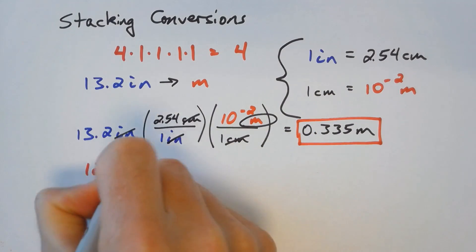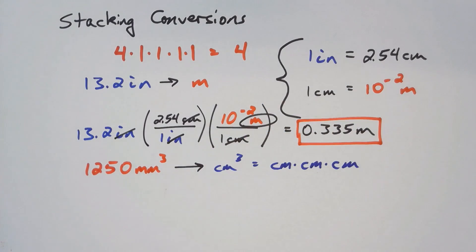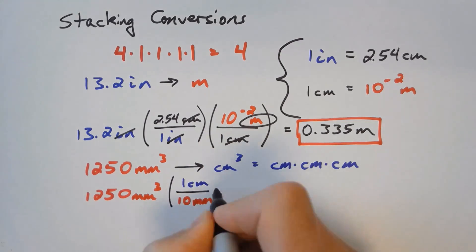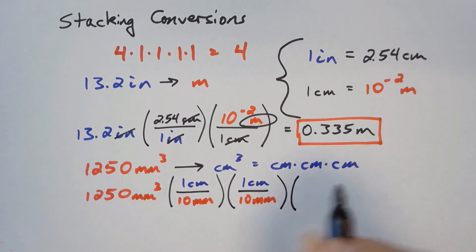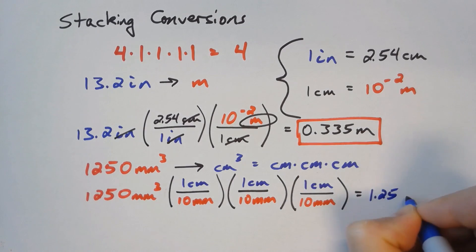We can also stack like conversion factors for converting squared or cubed units. Remember that cubic centimeters is centimeters times centimeters times centimeters. Stacking three of the conversion factors, one centimeter is equal to 10 millimeters, yields the desired outcome.